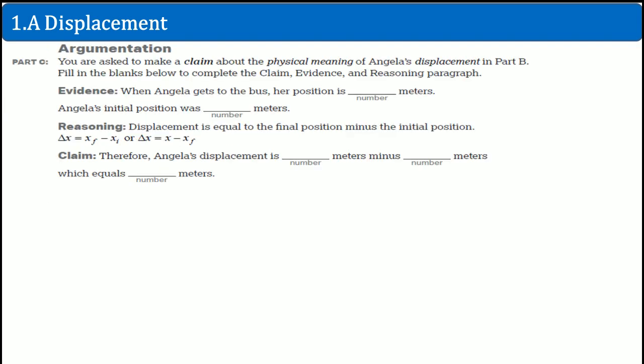Here's the argumentation. You are asked to make a claim about the physical meaning of Angelica's displacement in part B. Fill in the blanks below to complete the claim, evidence, and reasoning. This is the argumentation of explaining a physics problem - claim, evidence, and reasoning. In this format, it gives you evidence first.